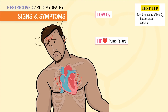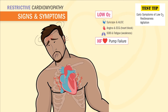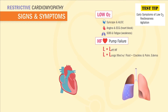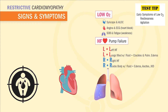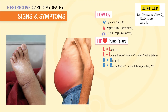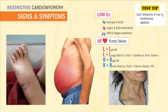Signs and symptoms of low oxygen: in the brain we're going to see syncope, but always our first sign is going to be restlessness and agitation — that change in mental status. In the heart we'll see angina, ECG dysrhythmias, shortness of breath also called dyspnea, and fatigue. Heart failure signs and symptoms: left side of heart failure is left for lungs, so we'll get wet lungs like crackles and pulmonary edema. Right side of heart failure is right for the body, so we'll get a swollen body filled with edema, ascites, and JVD — that jugular vein distension.